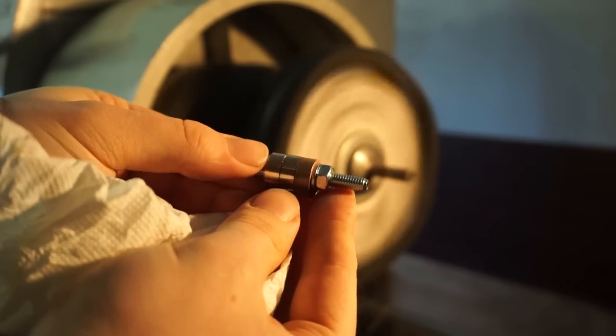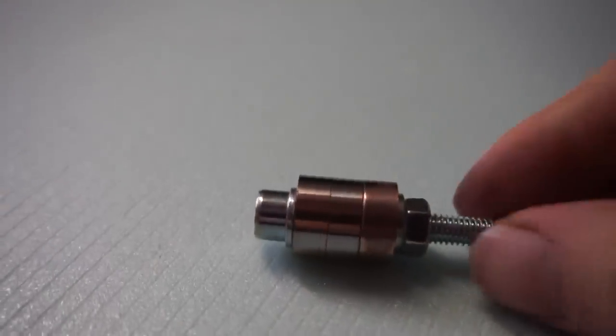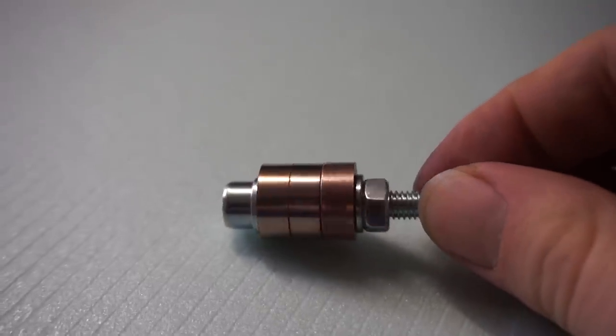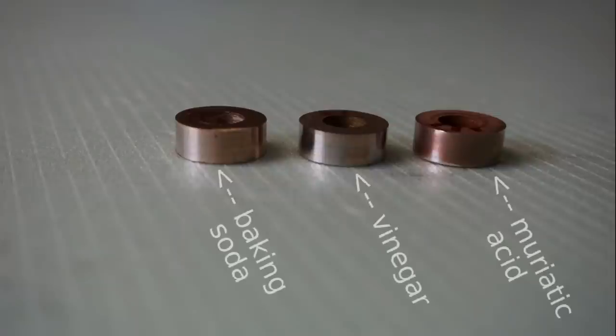Examining the results of the test showed that the coating process using muriatic acid took the treatment the best. Just a very small area of steel had been exposed. The baking soda is the distant second. It had large blank spots but was notably better than the one using vinegar.